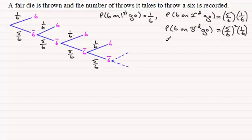And if we were to keep this up, you could see then that the probability of getting a six on the fourth go, well, that's going to be three failures. That is, we don't get a six. So, that would be five-sixths cubed. And then we get a success. We throw a six. So, that's going to be times the probability of getting a six, which is one-sixth.